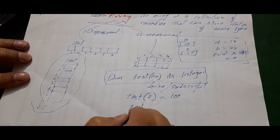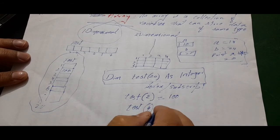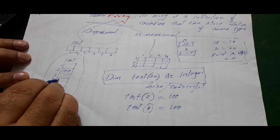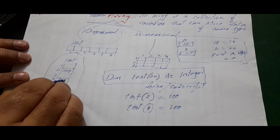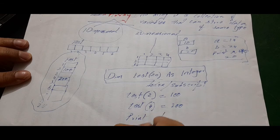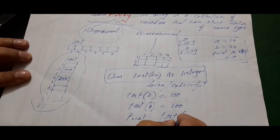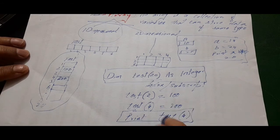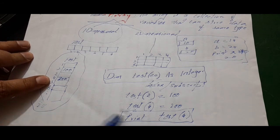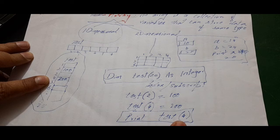When writing 'print test(4)', the computer will display the value stored at the fourth location of the test array. Since we stored 200 at location 4, it will display 200 on screen. So the same logic applies for reading: give the array name and in brackets provide the index number, and the value at that location will be displayed.